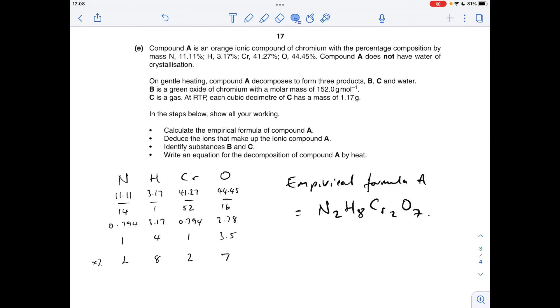So moving on to part E now, we've got to work out the empirical formula of A, which you can see I've already written up there. For C, we just put the percentages over the relative atomic masses. That gives us the moles. Make sure these are the three significant figures. Divide everything by the smallest, so obviously that's 0.794. So we get this ratio here.